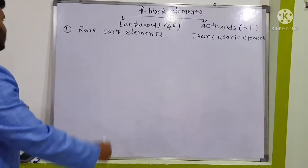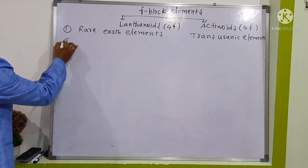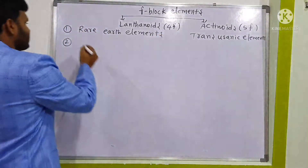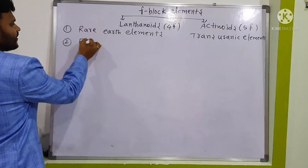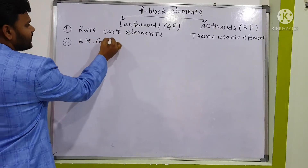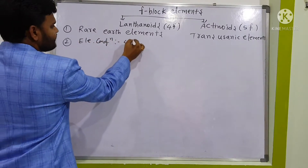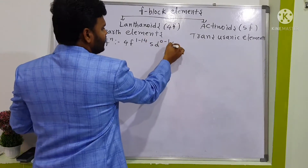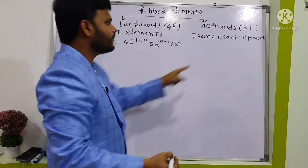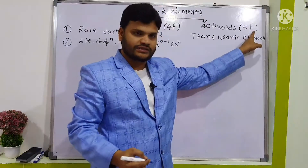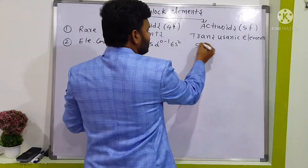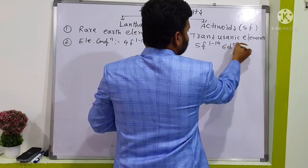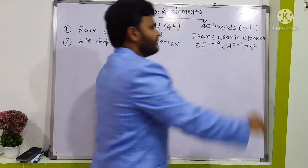The general electronic configuration of lanthanoids — belonging to the 4F series — is 4F¹⁻¹⁴, 5D⁰⁻¹, 6s². For actinoids, belonging to the 5F series, the general electronic configuration is 5F¹⁻¹⁴, 6D⁰⁻¹, 7s².